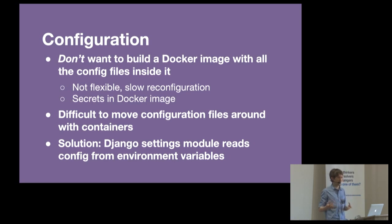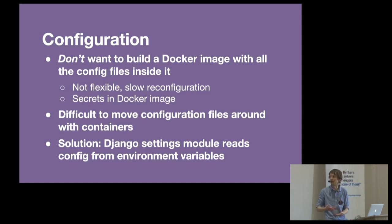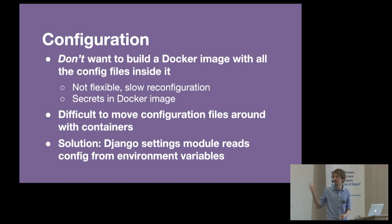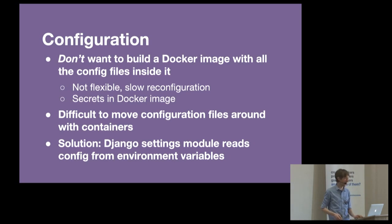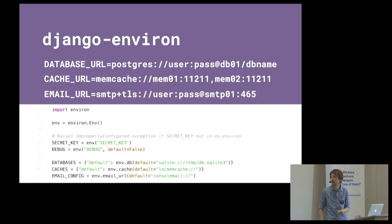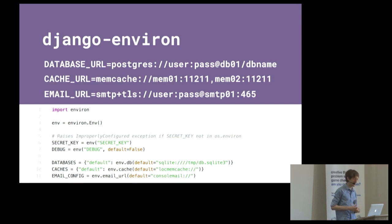A few notes on how to get Django working in containers. We don't want to build a Docker image with all the config files inside it - it's very tempting, but every time you want to reconfigure you have to rebuild the image, and you start having passwords in your Docker image. So generally the solution is to have your Django settings module read config from environment variables. There's a package called django-environ that makes this quite nice - you can define lots of things in single environment variables, like all your database settings, and it handles converting environment variables into booleans or integers.